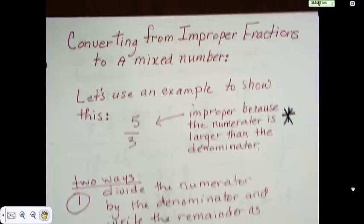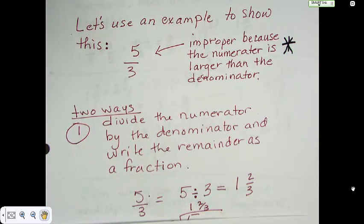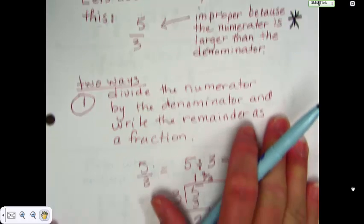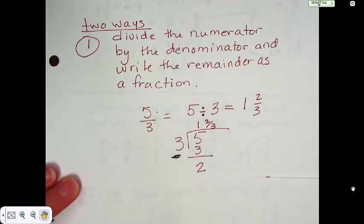So we start out with an improper fraction. Remember, the fraction is improper because the numerator is larger than the denominator. So we're going to go down here. There's two ways to do it. The first way is to simply divide the numerator by the denominator and write the remainder as a fraction. Here's that example. You've got 5 over 3. Divide 5 by 3. Here is the work right here. 5. 3 goes into 5 one time with 2 as a remainder. And put the 2 over the divisor. You get 1 and 2 thirds.